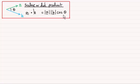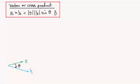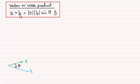Now what I want to do is introduce you to another type of product. It's called the vector product for two vectors a and b. It's defined as a cross b — we say cross, not times. So a cross b, or the vector cross product, is defined as the magnitude of a times the magnitude of b times the sine of the angle between the two vectors a and b.